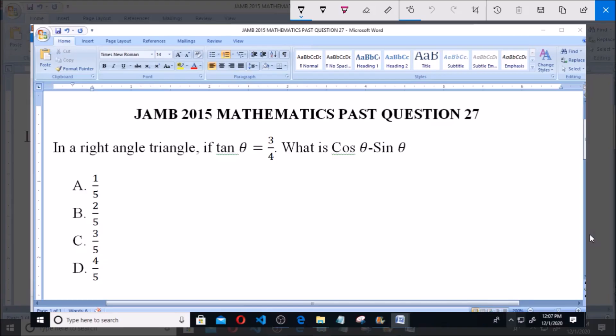Good day and welcome. I'll be answering JAMB 2015 Mathematics Past Question 27. In a right angle triangle, if tan θ = 3/4, what is cos θ - sin θ?